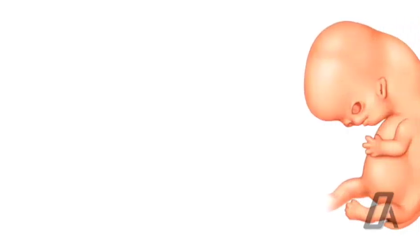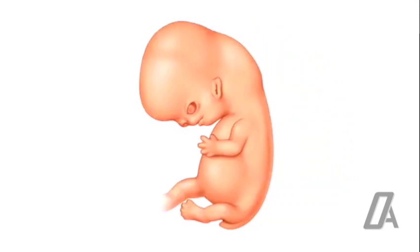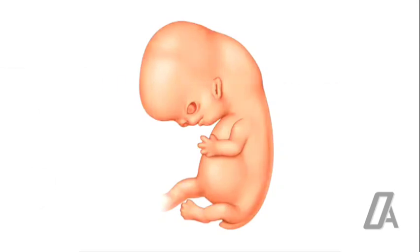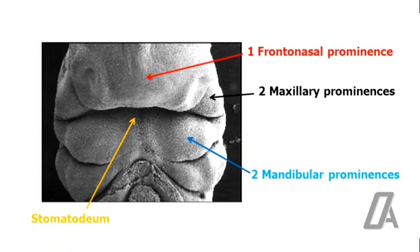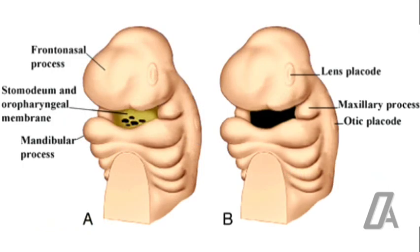Between the third and eighth week of intrauterine life, most of the development of the face takes place. At around the fourth week of intrauterine life, the branchial arches begin to develop. The developing forebrain, the prosencephalon, forms a downward projection called the frontonasal process, which overhangs the primitive oral cavity or the stomodeum. The stomodeum at this stage is not open to the environment, but is closed by a bilaminar membrane called the buccopharyngeal or oropharyngeal membrane.